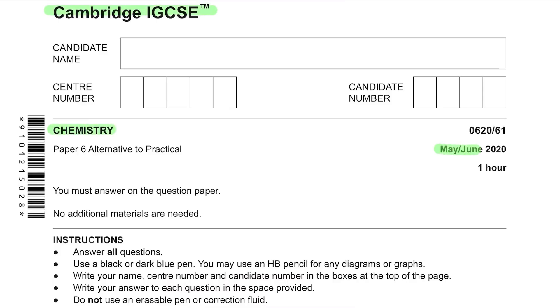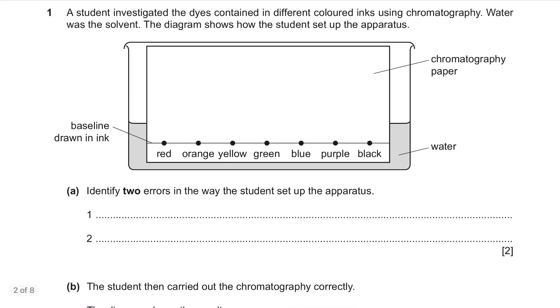Cambridge IGCSE Chemistry May June 2020 Paper 6 solved. Question 1. A student investigated the dyes contained in different coloured inks using chromatography. Water was the solvent. The diagram shows how the student set up the apparatus.